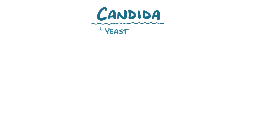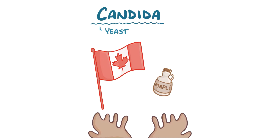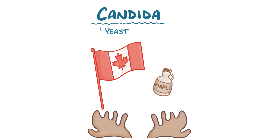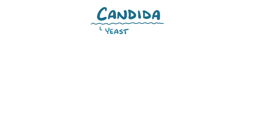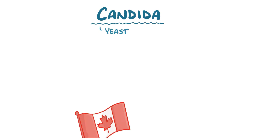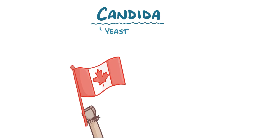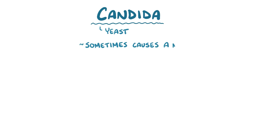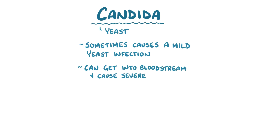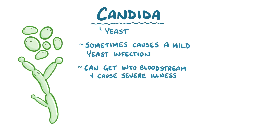Candida is a yeast, not the maple syrup-loving country in North America, although Candida can be found in Canada as well. Candida sometimes causes a mild yeast infection, but in some situations it can get into the bloodstream and cause severe illness. There are various types of Candida species, and over 20 of them can cause disease in humans.